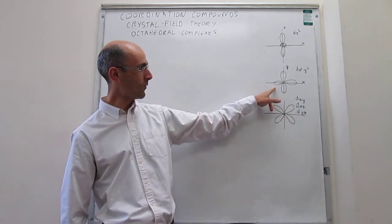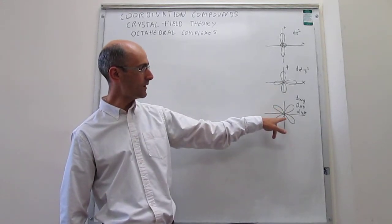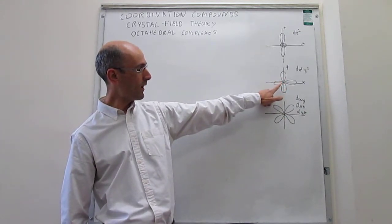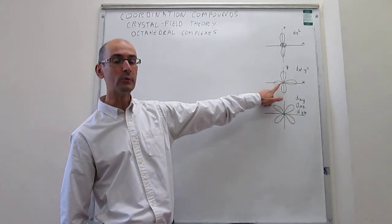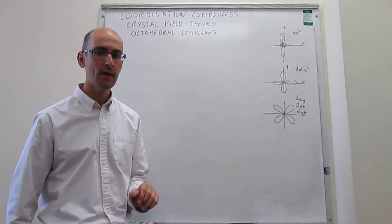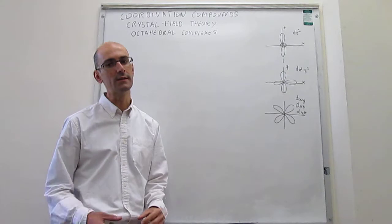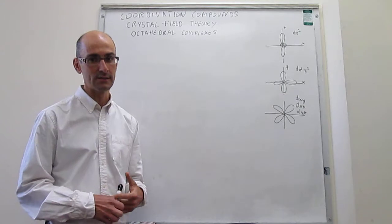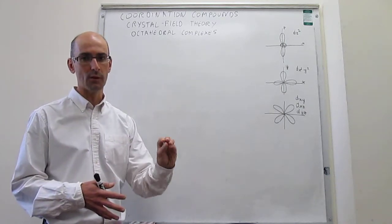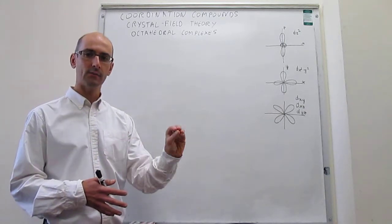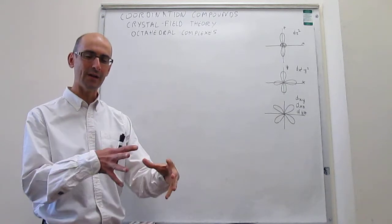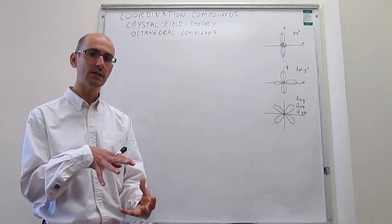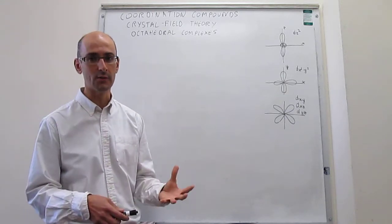Notice the difference between the dx²-y² and the other three: the dx²-y² is the one that points along the axes. So now we are going to see how this is important for understanding octahedral complexes. In octahedral complexes, there will be a transition metal in the center of the octahedron, and then six ligands distributed along the vertices of the octahedron.